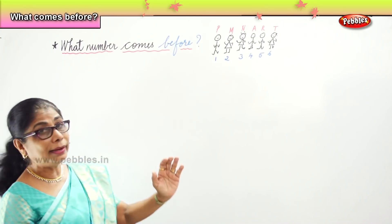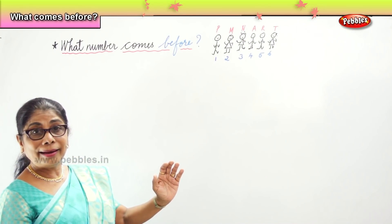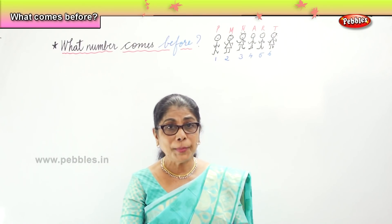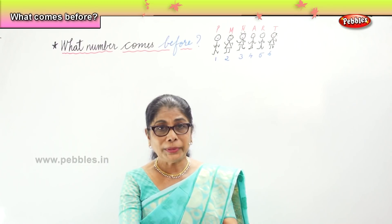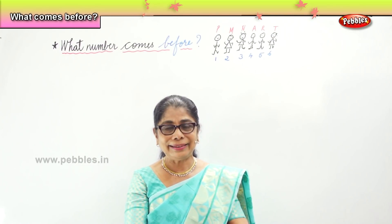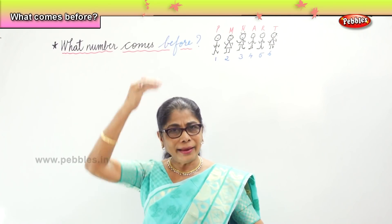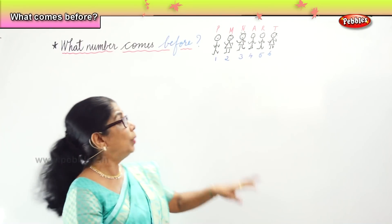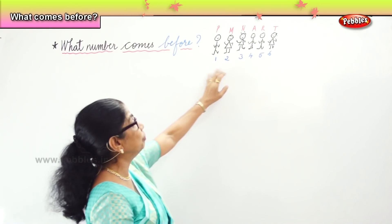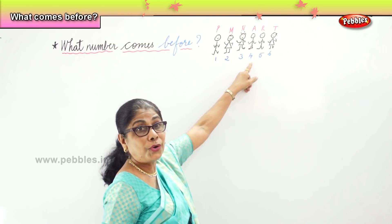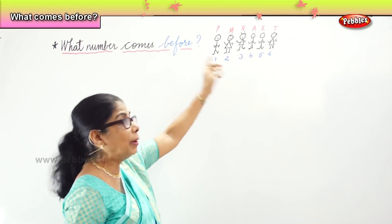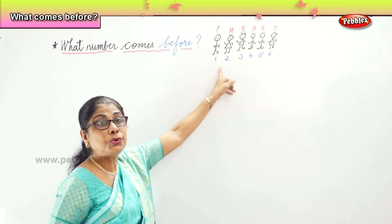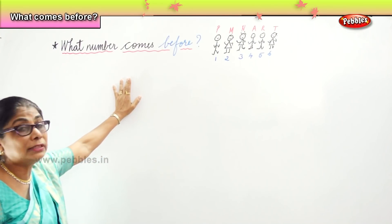They are all standing in a line. And who is standing before? What is before me? Nobody is there, nothing is there. Behind — after me, there is a board. So we are doing what number comes before. Before four? Three. Before six? Five. Before two? Numbers — what number comes before?